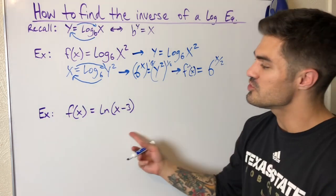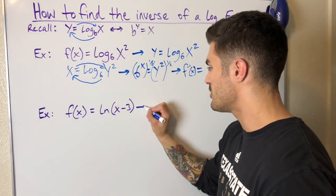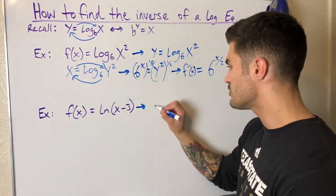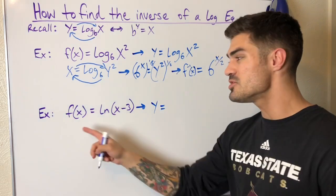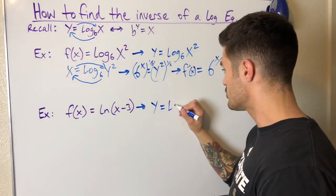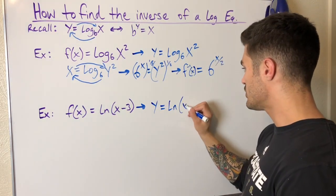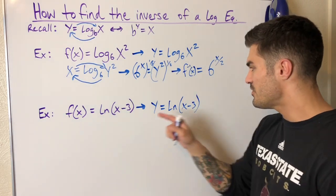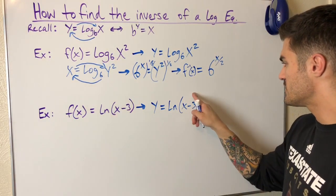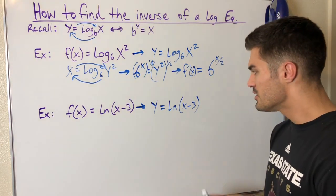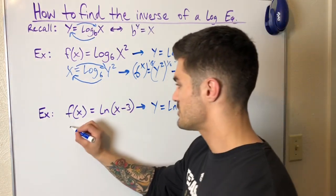Let's try this example. Same thing. The first thing I'm going to do is replace f(x) with y. Sometimes you'll be just given y, then you can go straight into switching the position of x and y. But if it's f(x), you always want to replace it with y—just makes it simpler dealing with x and y. Now I can switch the position of x and y.